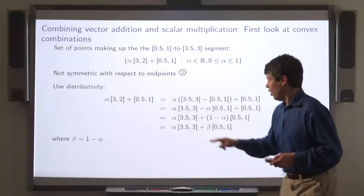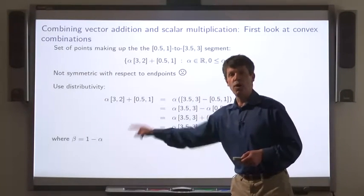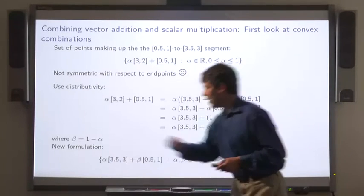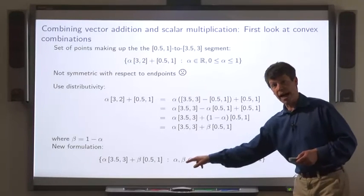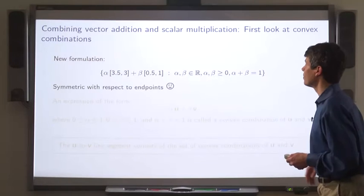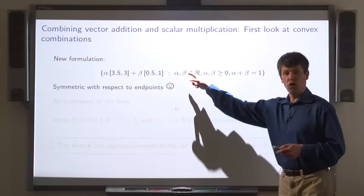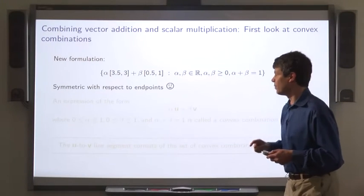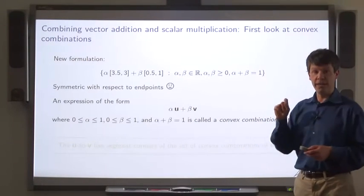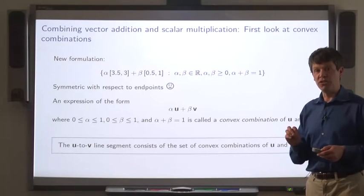So now we've got this expressed in terms of the two endpoints and two scalar multipliers, alpha and beta, where beta is 1 minus alpha. So a more symmetric formulation of the line segment between two points is alpha times one point plus beta times the other, ranging over all alpha and beta that sum to 1 and are non-negative. And this formulation is symmetric. So our new formulation is alpha times one vector plus beta times another for all alpha and beta that are non-negative and sum to 1. Expression of this form where the scalar multipliers are non-negative and sum to 1 is called a convex combination. And what we've seen is that the u to v line segment is the set of convex combinations of the vectors u and v.